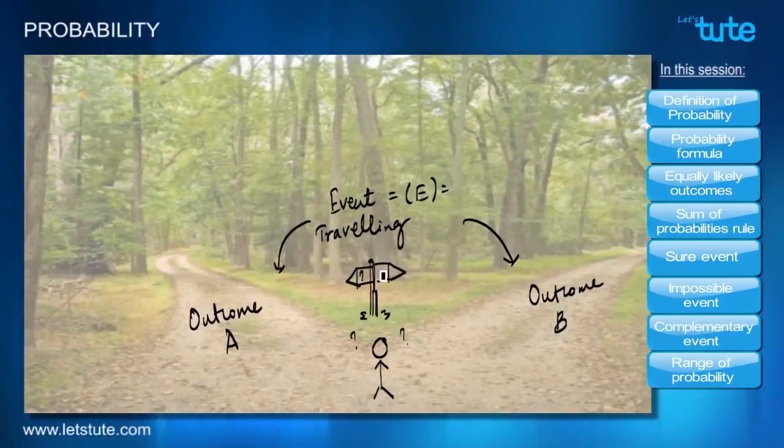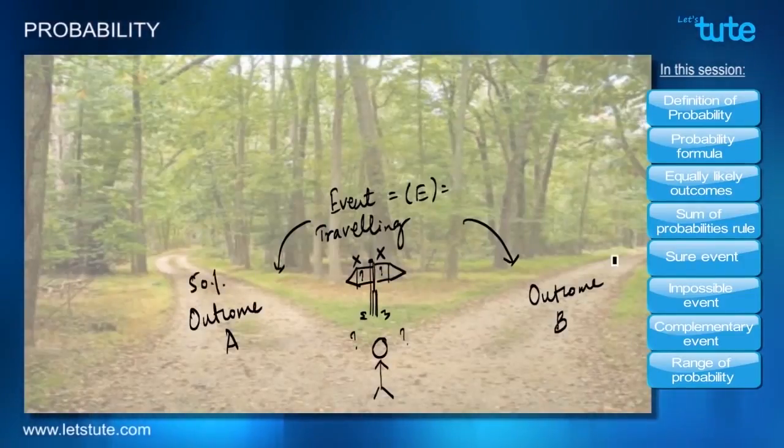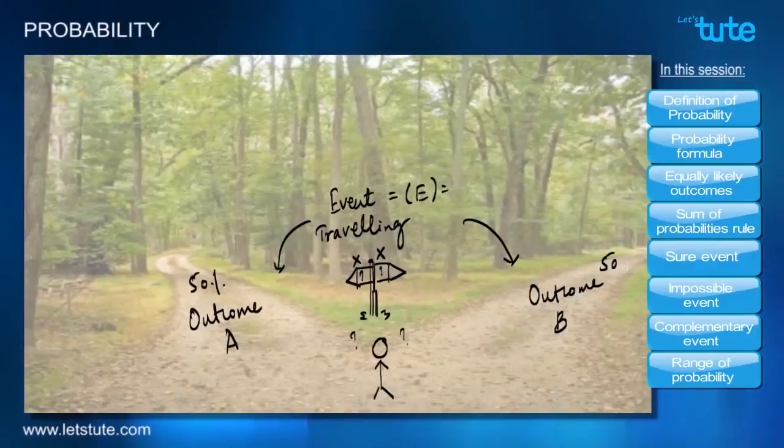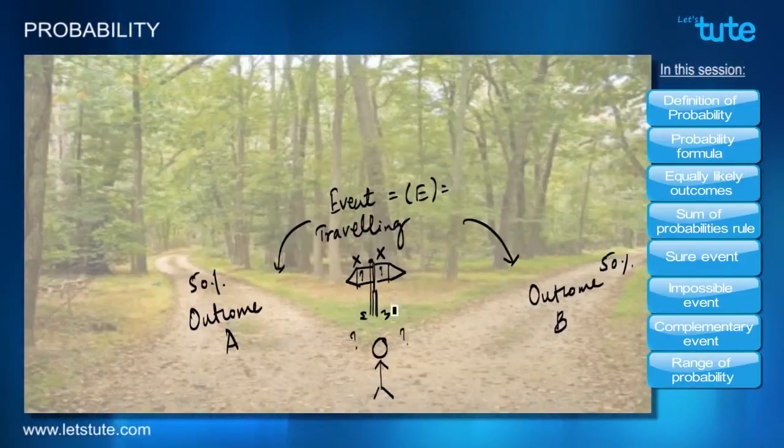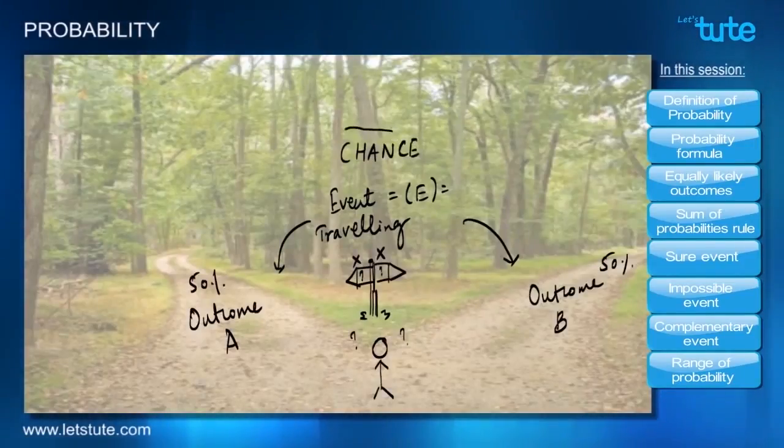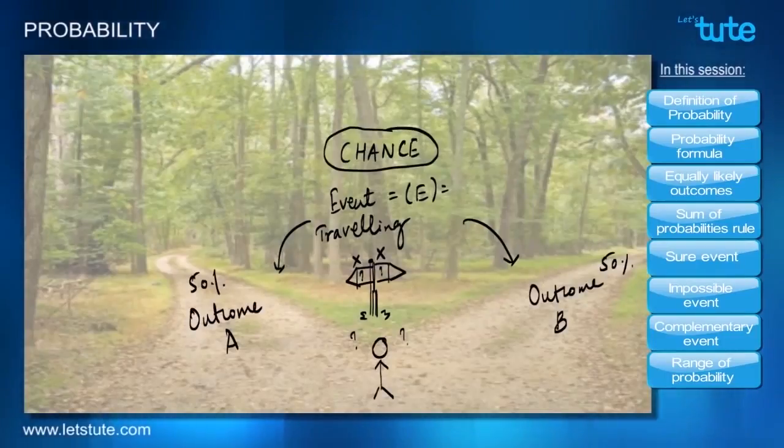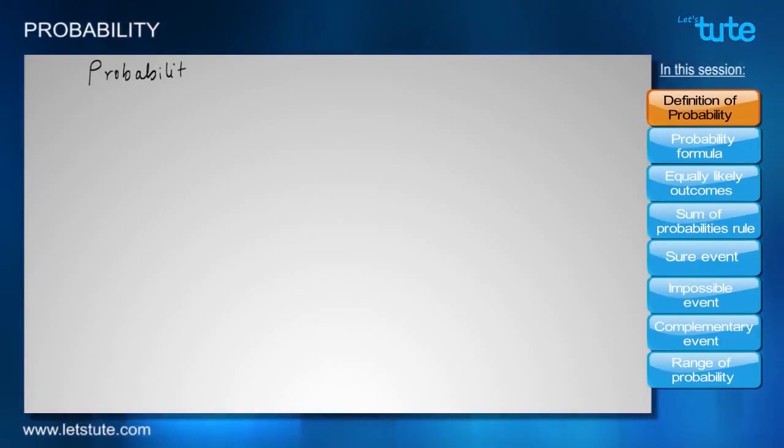Let's say we don't have any sign that can help us in choosing between the two roads. Then we normally say that there is a 50% chance of taking either road A or road B. Why do we say 50%? Because there is clearly no bias towards any particular road. What we are talking about here is the chance of choosing a road, and when we talk about chance, we talk about probability.